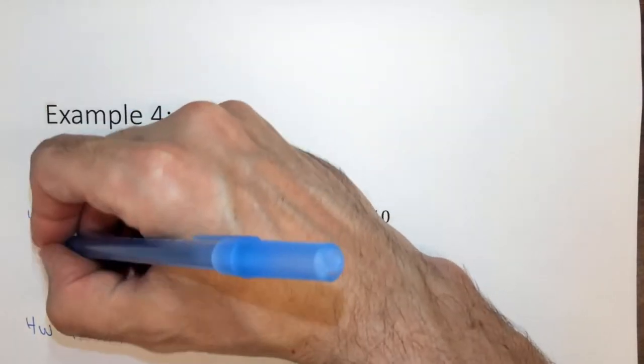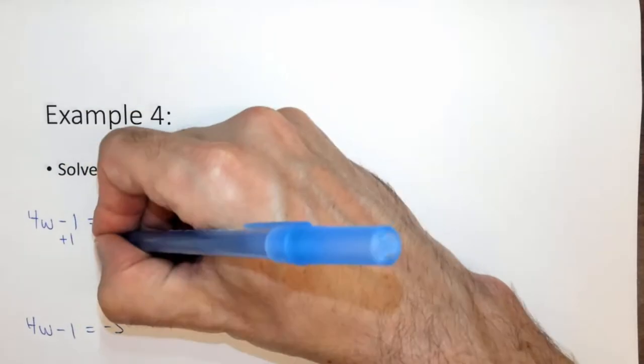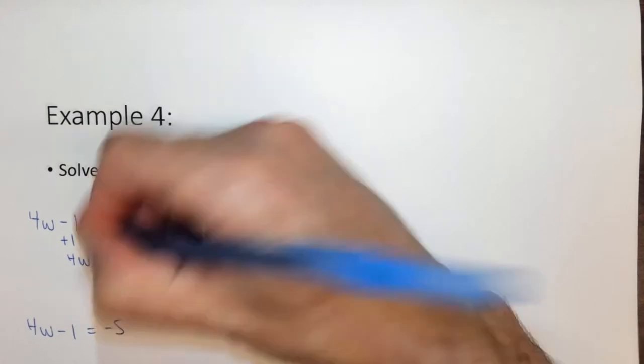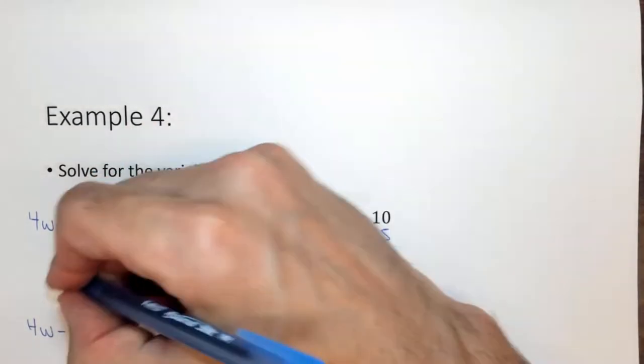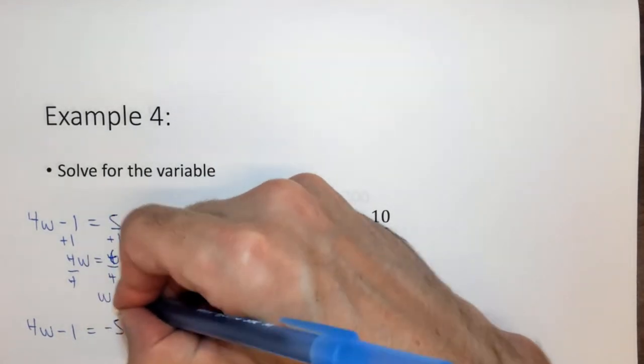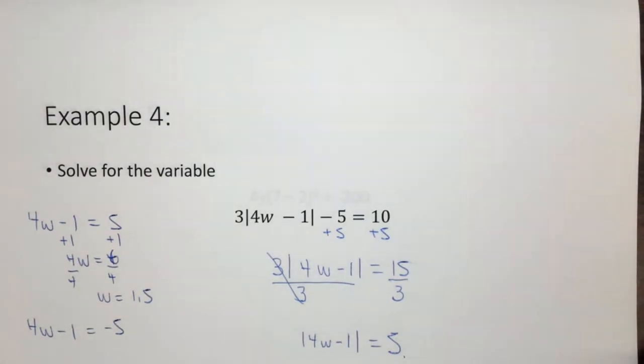Now in this case we add 1, add 1. 4w equals 6, divide by 4, divide by 4. W equals 1.5, 6 fourths is 1.5.